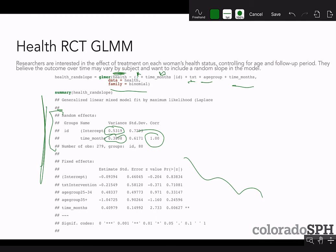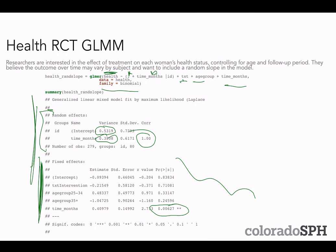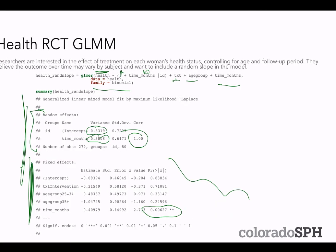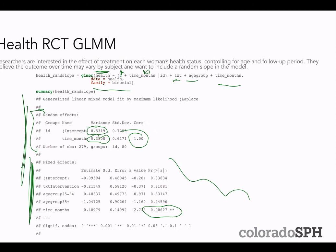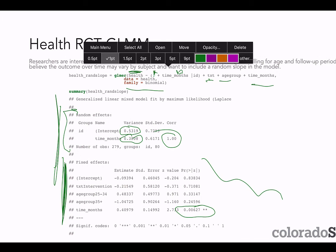The model summary shows random effects including variance for the intercept and variance for time in months, plus the correlation between the random slope and random intercept — which comes out as perfectly correlated, which is unusual. Only the time variable is significant as a fixed effect; treatment is not. A perfect correlation between slope and intercept suggests something may be off, warranting further exploratory analysis.